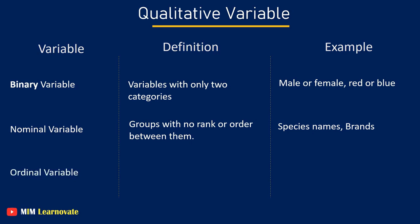Ordinal variable - groups that are ranked in a specific order. For example, finishing place in a race.